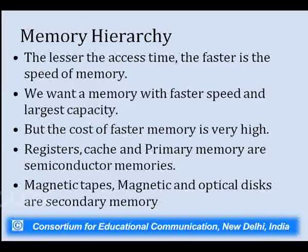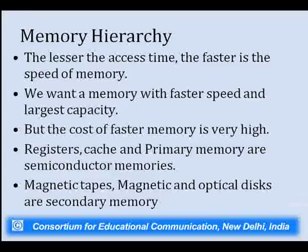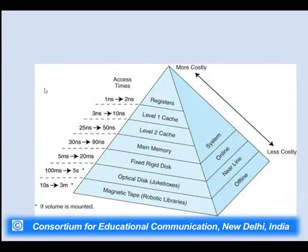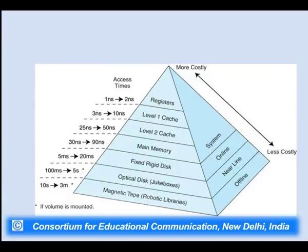Therefore we need different types of memories: registers, cache, and primary memory, which are semiconductor-based; and magnetic tapes and discs, which are secondary memories. This pyramid diagram shows the different categories of memory with their access time and cost. Magnetic tape has the highest access time but the least cost; discs have less access time and are more costly; then comes main memory, cache, and registers. Registers have the lowest access time — they are the fastest and most expensive.